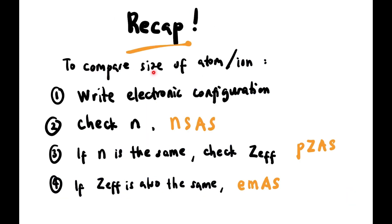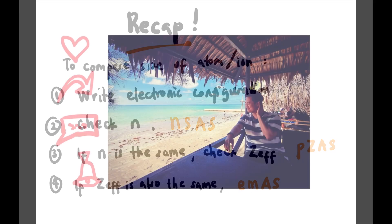Let's do a recap. To compare the size of an atom or ion: first, write the correct electronic configuration. Then check n — if n is different, use the NSAS factor (more shells = bigger size). If n is the same, check Zeff — if Zeff is different, use PIZAZZ. If Zeff is also the same, use EMAS. Remember, don't skip steps — follow them one by one. Please like, comment, share, and subscribe. Thank you guys, stay tuned for the next one!